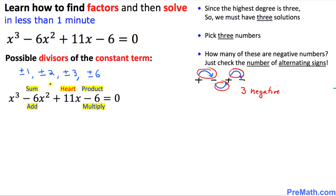Here is another clue: among those 3 numbers, if we add them, they should add up to negative 6, and if we multiply those 3 numbers, that also gives us negative 6. So what 3 numbers add up to negative 6 and multiply to negative 6? The answer is negative 1, negative 2, and negative 3. As you can see, adding these gives negative 6, and multiplying them also gives negative 6.